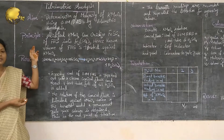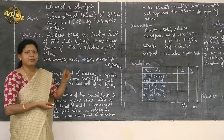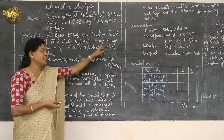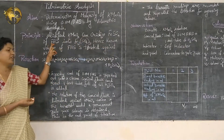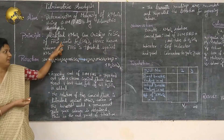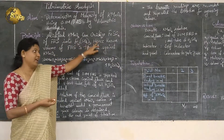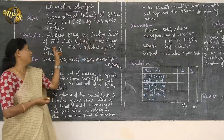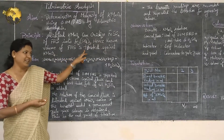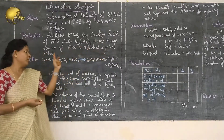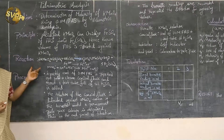Coming to the principle: acidified potassium permanganate can oxidize ferrous sulphate or ferrous ammonium sulphate into ferric sulphate. Hence, a known volume of ferrous ammonium sulphate is titrated against potassium permanganate.